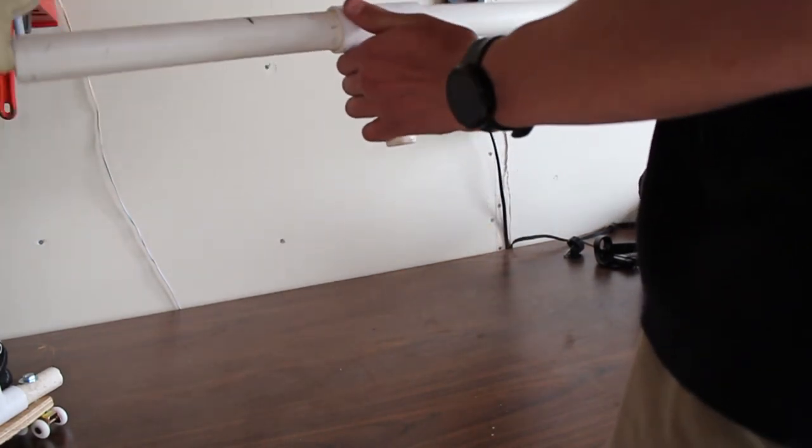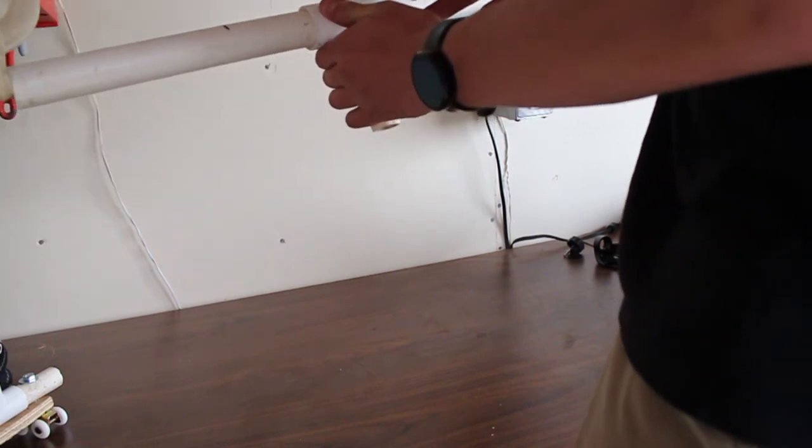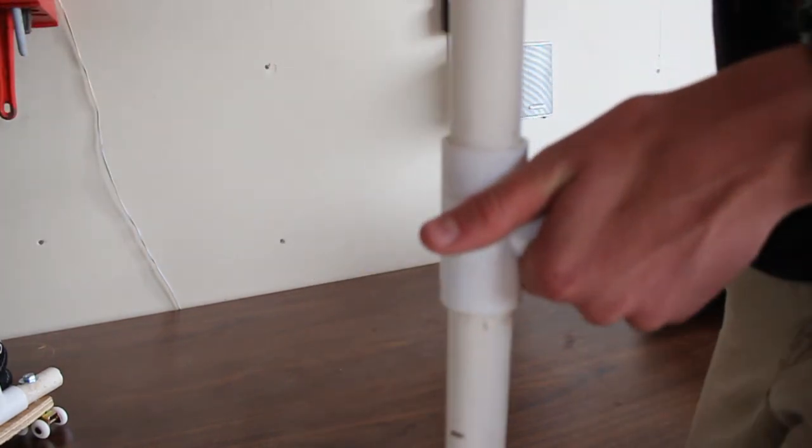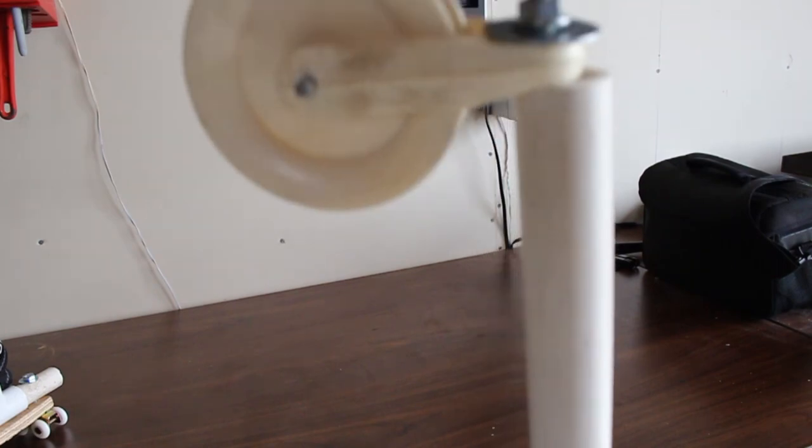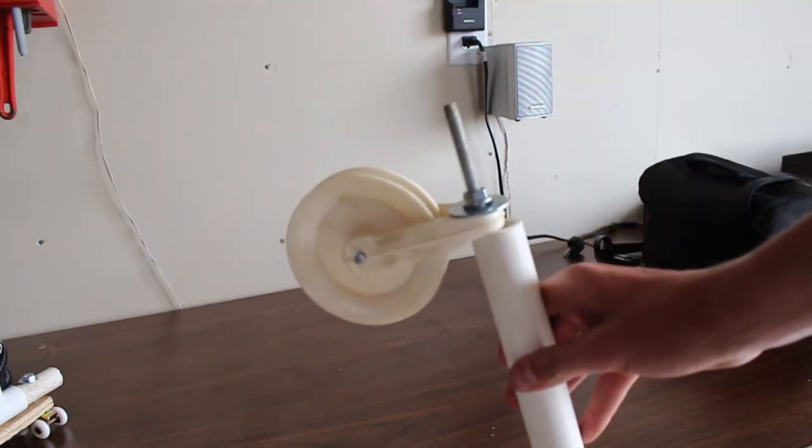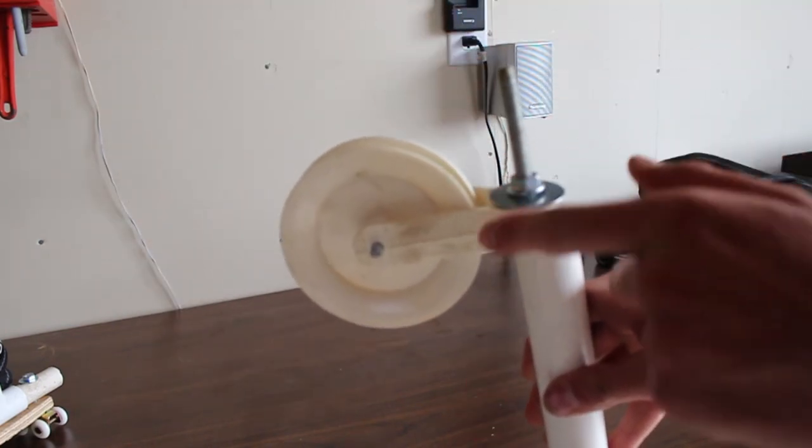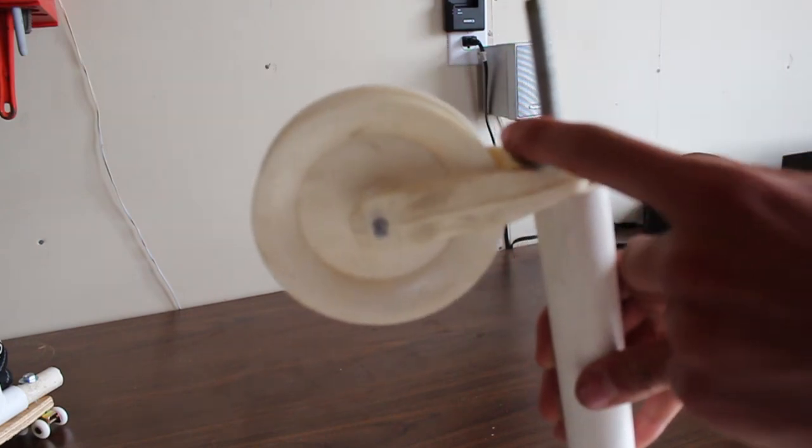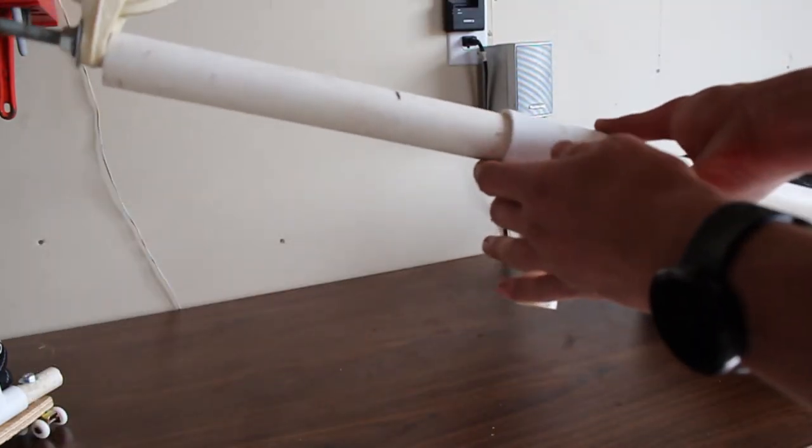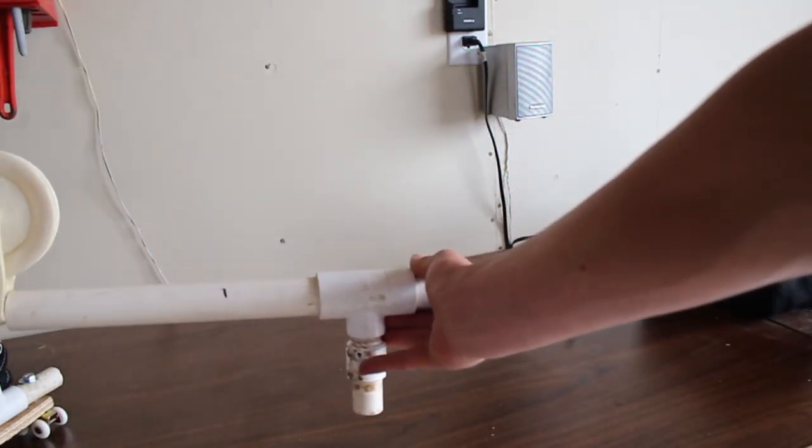I took a PVC pipe with a tee, cut this in half, put the tee in the center, and then took an all thread. So you take your all thread and you can run it through the PVC pipe with washers and nuts on the end. So then you will keep tension and keep the wheels up.